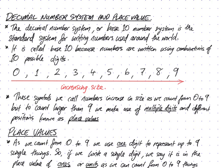These symbols increase in size as we count from 0 to 9. But there's a problem - if we have more than 9 things, we need to count larger than 9. We can't just use these 10 symbols. We need another way of writing numbers larger than 9. So we use multiple digits and put them in different positions known as place values.